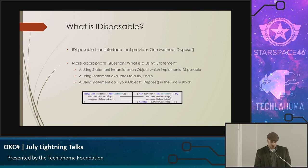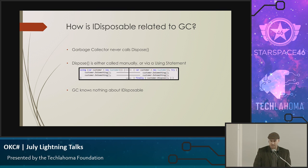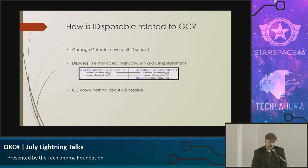Those two examples shown are exactly the same thing — one is a using statement and one is a try/finally. How is iDisposable related to the garbage collector? It's not. There's no relation. When the garbage collector runs, it does not call your dispose method. It's a misconception. You call dispose either manually on objects or via the using block, which is also manual.